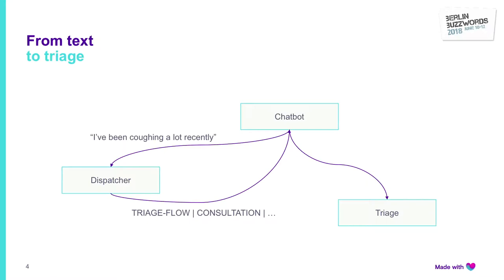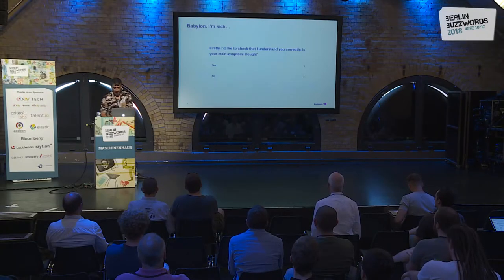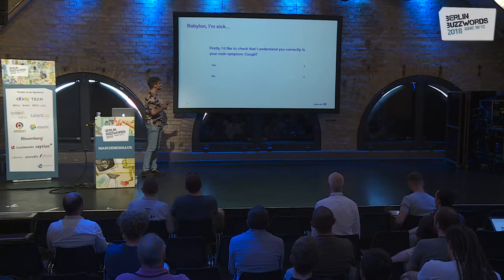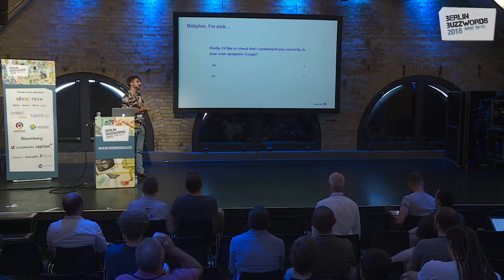Our dispatcher is basically a recurrent neural network trained to understand what the question is about. We might be asking to book a consultation — that is a certain type of flow. In this particular case, if you say "I have been coughing a lot recently," we are in a triage flow. The dispatcher sends information back to the chatbot, and the chatbot starts talking to our triage service. The triage service has the logic that deals with producing a new question or giving you the final outcome. The first thing the triage service asks is: are we talking about cough?